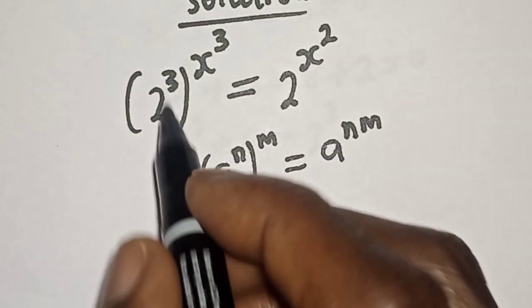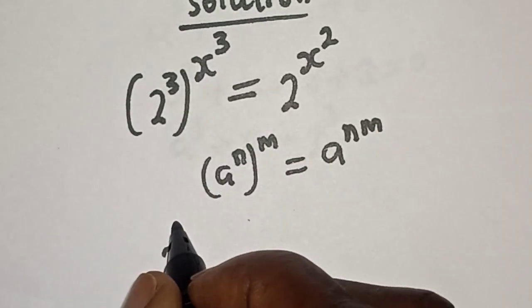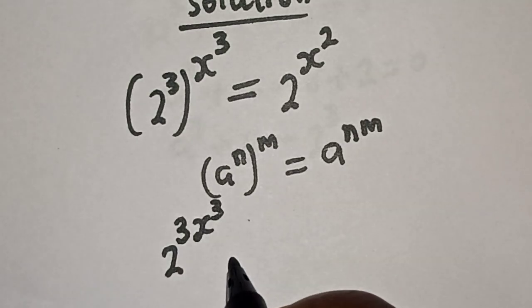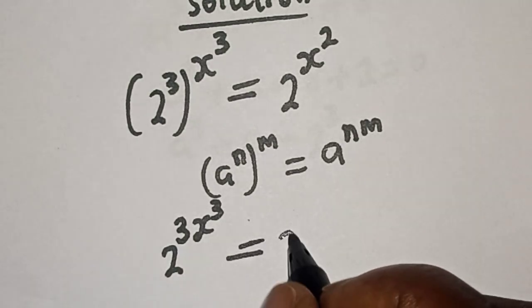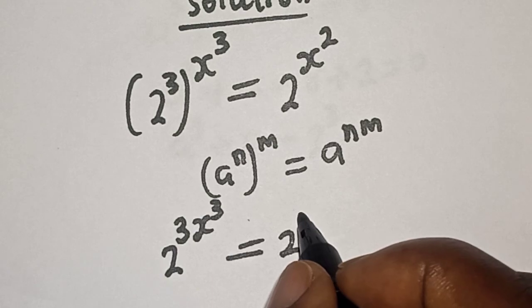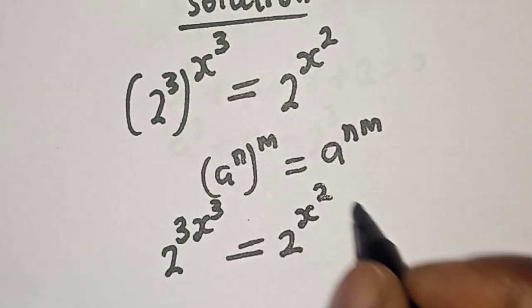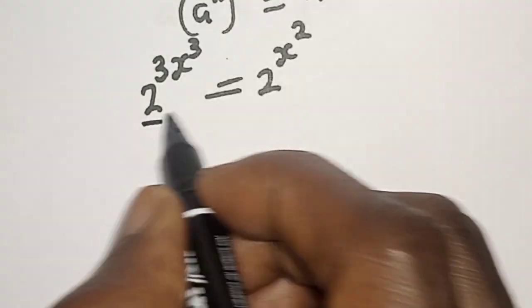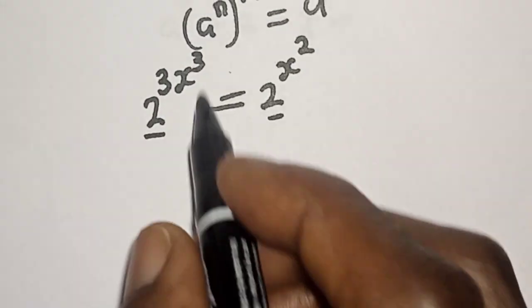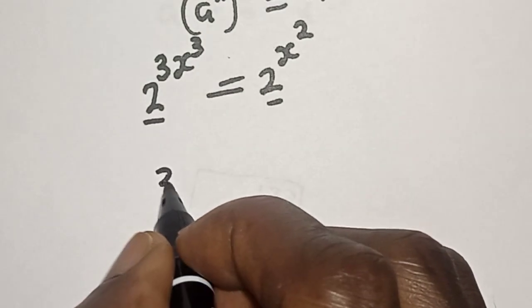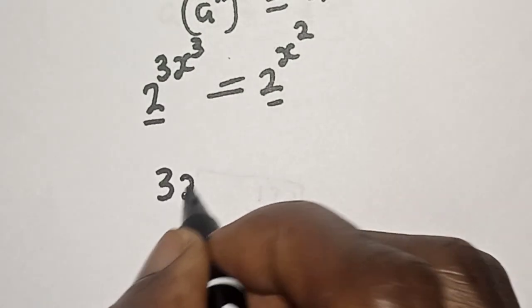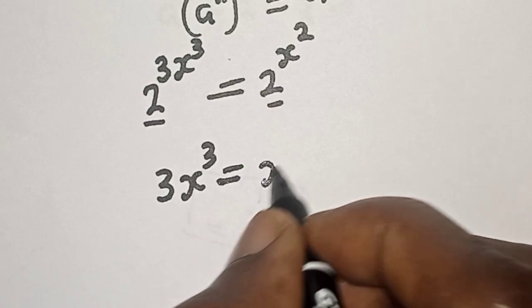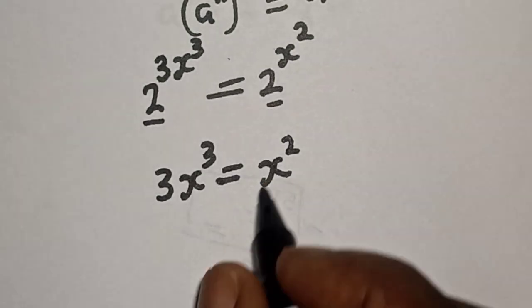Then we have 2 raised to power 3 times s raised to power 3, that is 3s raised to power 3, is equal to 2 raised to power s squared. Since they have the same base 2, we work with the exponents: 3s raised to power 3 is equal to s squared.